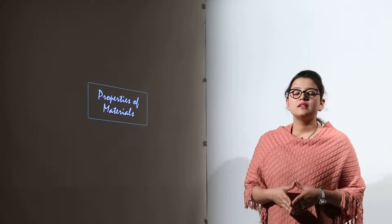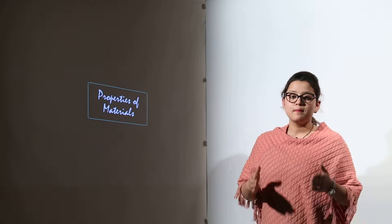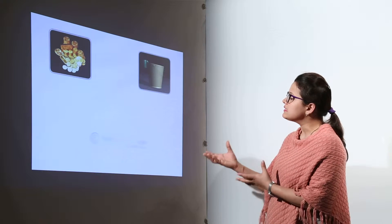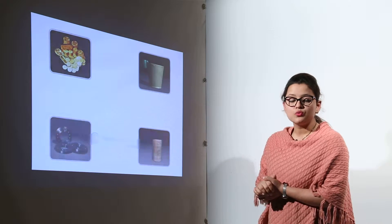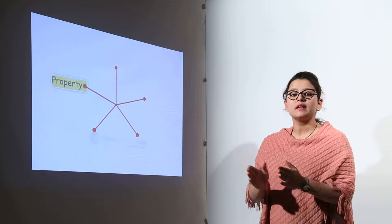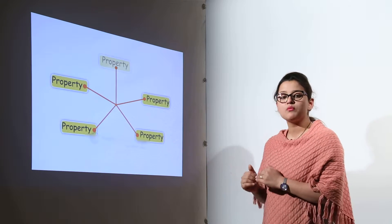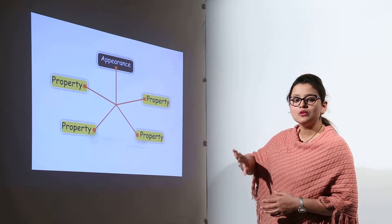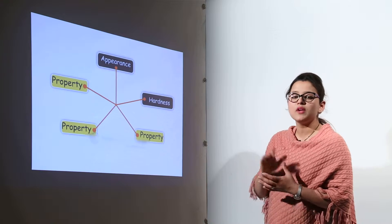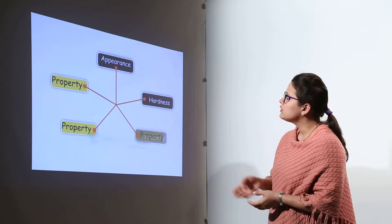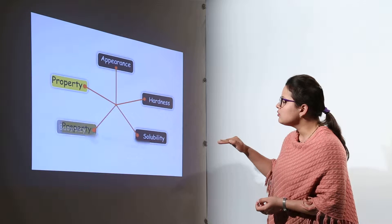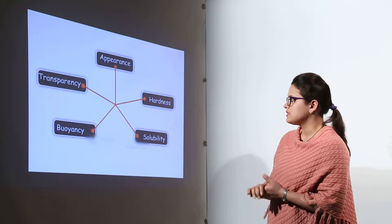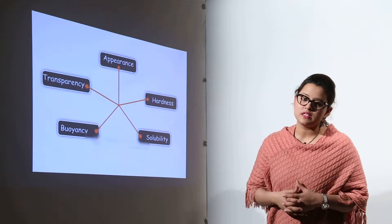We have studied that objects can be sorted based on different types. Materials have different properties, so materials can be classified based on their different properties. We are going to study five properties of materials: appearance, hardness, solubility, buoyancy, and transparency. Let us discuss each of them in detail.